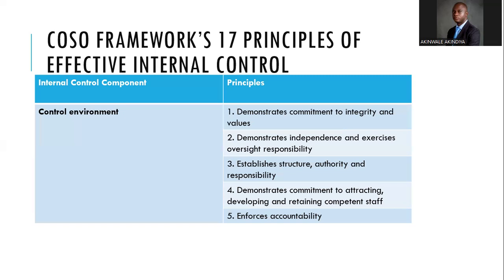Principle three: establish structure, authority, and responsibility. The organizational chart is very important — the leadership sets up the organizational structure. Reporting lines, separation of powers, and clout assigned to offices all matter. For example, what authority does the head of internal audit have? What clout does the head of information security have relative to the head of IT? Structural authority and responsibility must be well balanced within the organization.